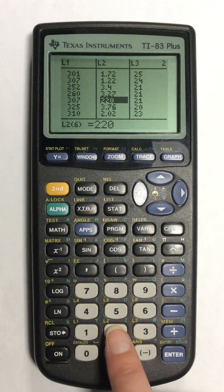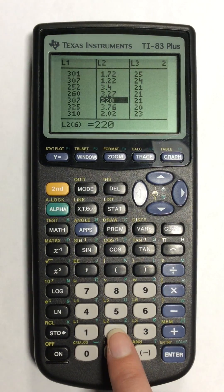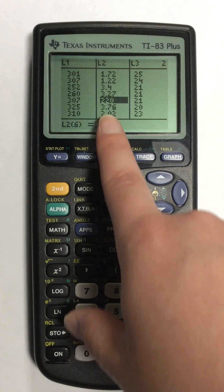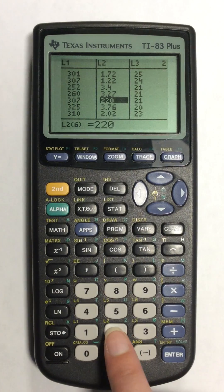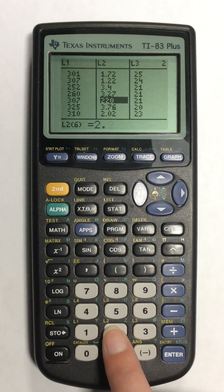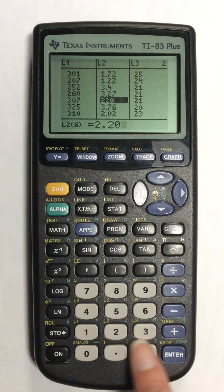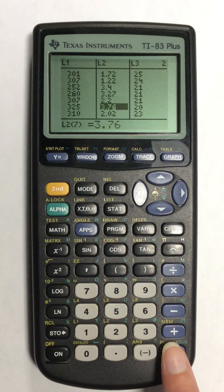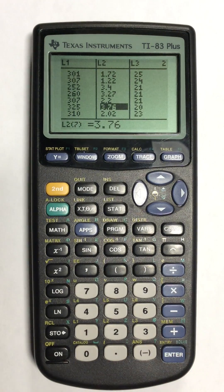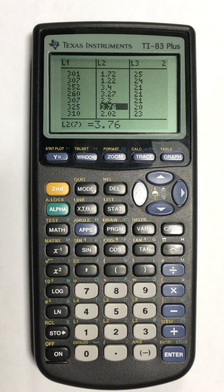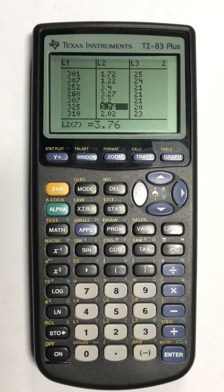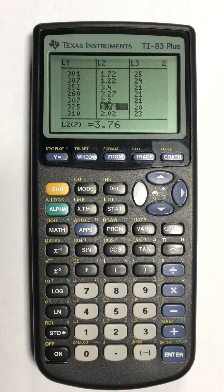And then just type in the correct number. So this number should be 2.20. I'm just going to type in 2.20 and then hit enter. That will overwrite the number that you have entered in incorrectly. And then you can go back and do any sorts of summary lists or anything like that that you need to perform for the question.